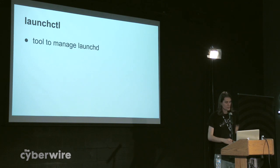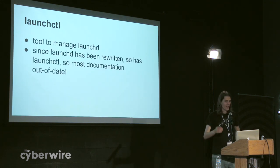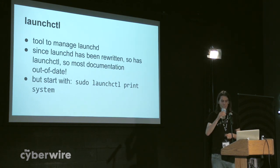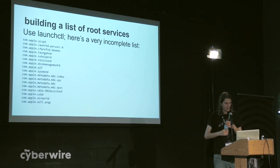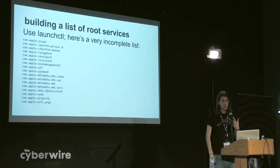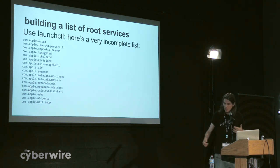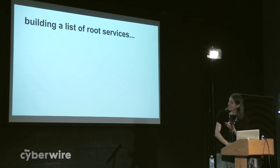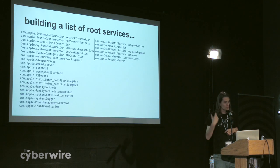There's this command line tool called LaunchControl, used to manage LaunchD. What I haven't mentioned is that LaunchD has been completely rewritten as of Yosemite, so pretty much everything you can find online is completely out of date and won't work. But one thing to start you off: 'launchctl print system' will show you a bunch of system services. To get an idea of the attack surface available from a privilege escalation point of view, we can use LaunchControl to enumerate a list of all the services running as root. The list is quite a lot longer than it looks here — it goes on to multiple pages. There are a huge number of services running as root on your OSX and iOS system.